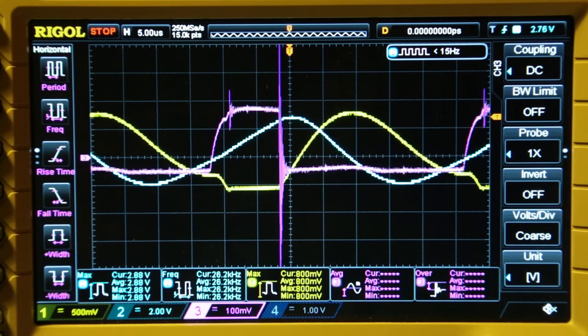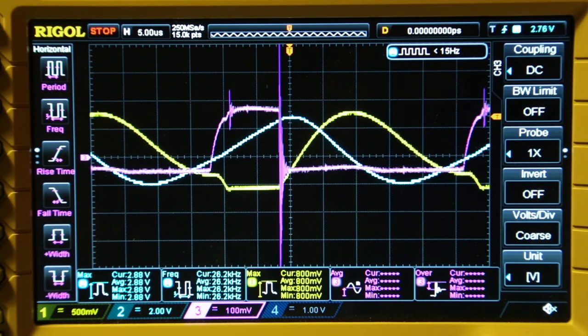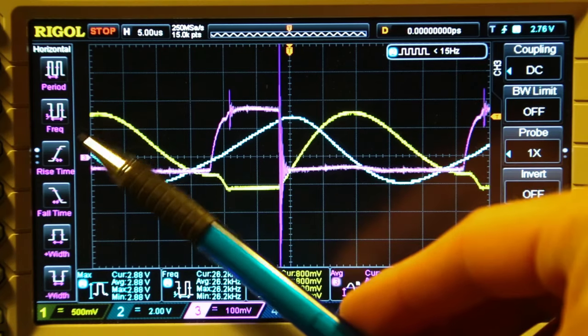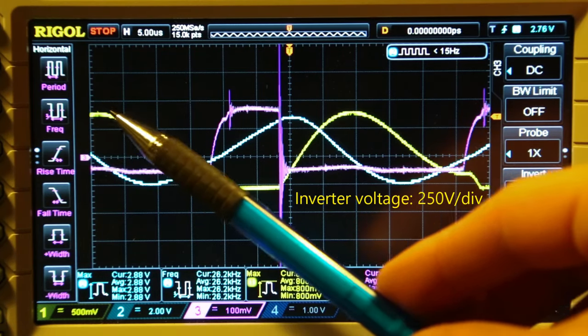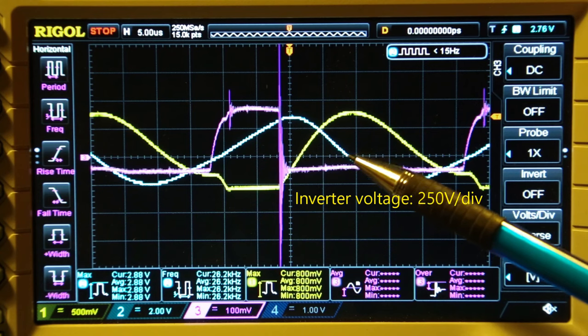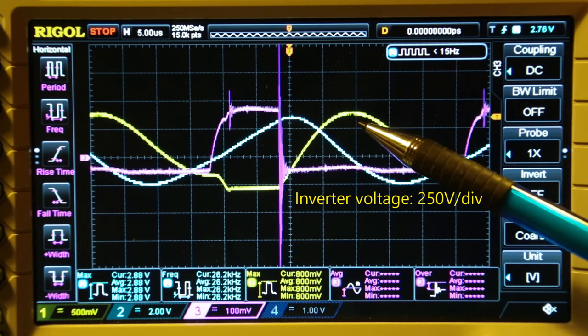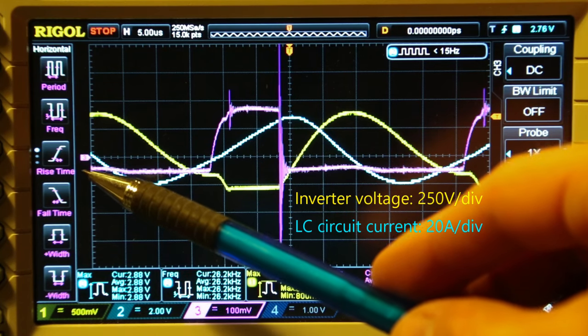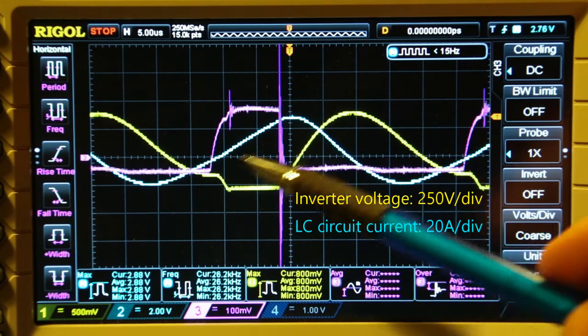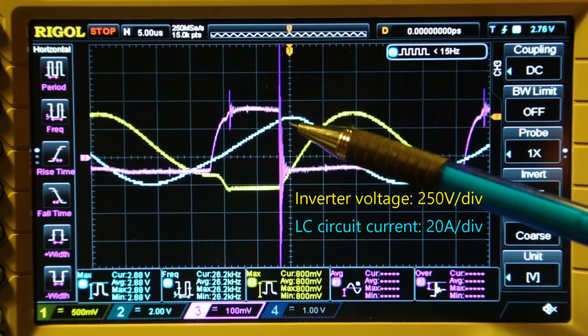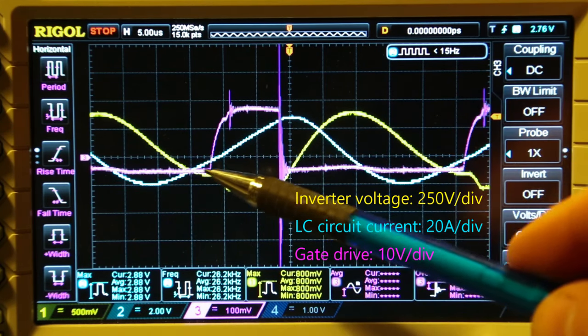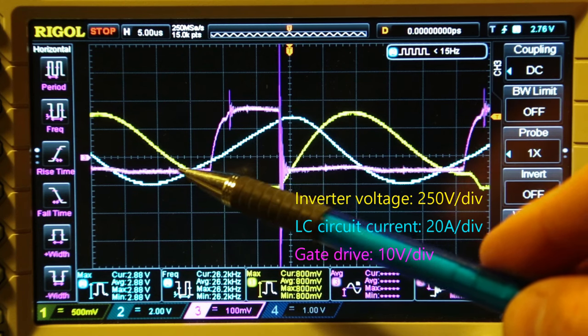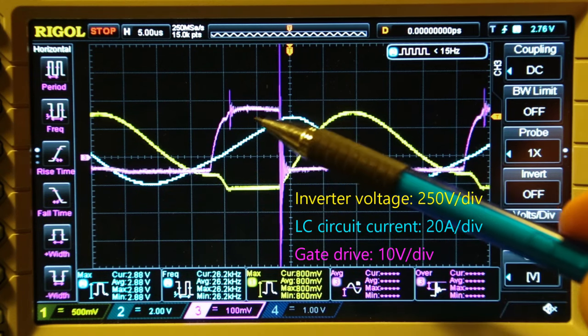So before we get started doing the measurements, let's first run through the oscilloscope setup. At channel 1, the yellow trace, we have the inverter output voltage. This is 250 volts per division. Channel 2 is the LC primary circuit current, the blue trace, at 20 amps per division. And we have the purple trace on channel 3, which is the gate drive waveform at 10 volts per division.